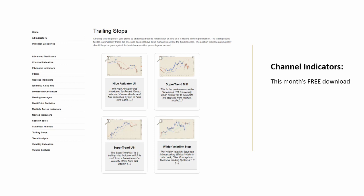That pretty much wraps up this Indicator Spotlight on the Wilder Volatility Stop. You'll find it in the trailing stop category, along with a number of other trailing stops: the Chandelier Stop, which is very similar to the Donchian anchor we showed here but based on highs and lows of the look-back period rather than the significant close; the ATR trailing stop, which we talked about in a previous spotlight; the High-Low Activator; two versions of the Supertrend indicator — a total of 135 to 140 indicators for a $150 one-time membership fee.